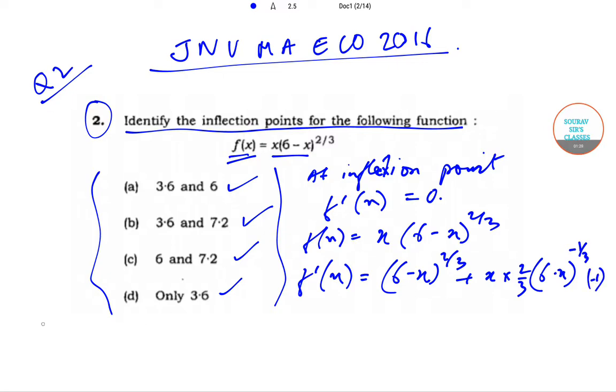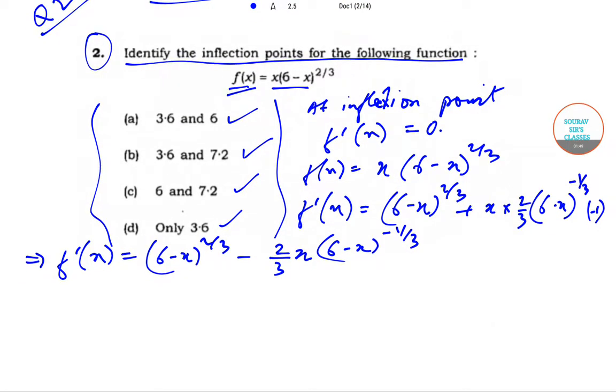So that will give us f'(x) = (6-x)^(2/3). If we take (6-x)^(2/3) common, then this will give us 1 minus 2/3 x.